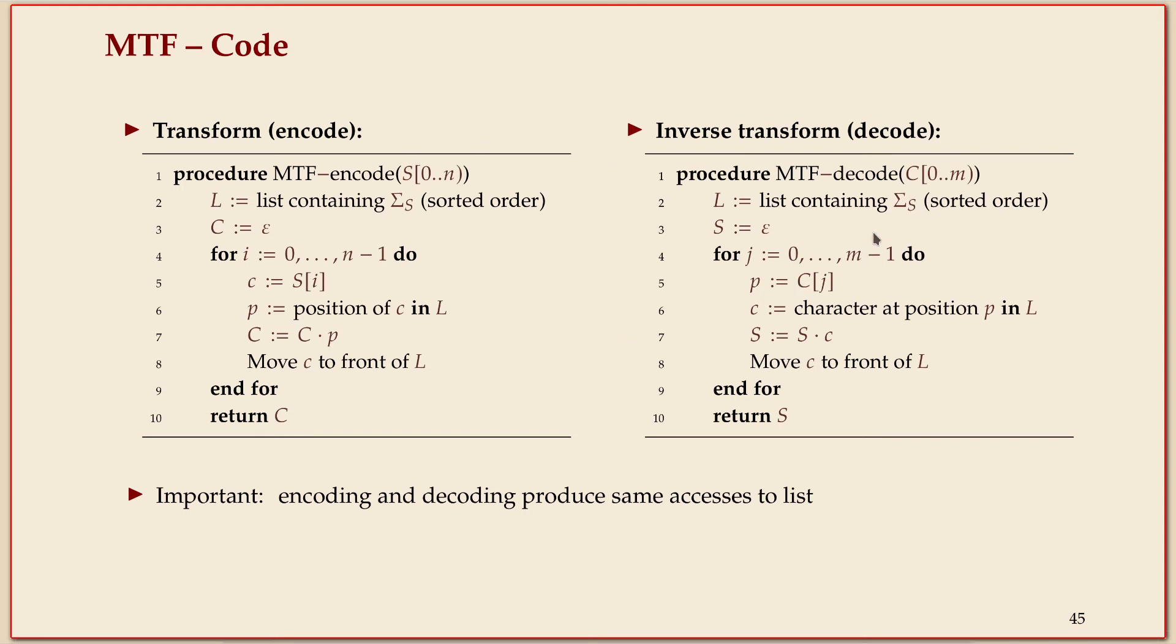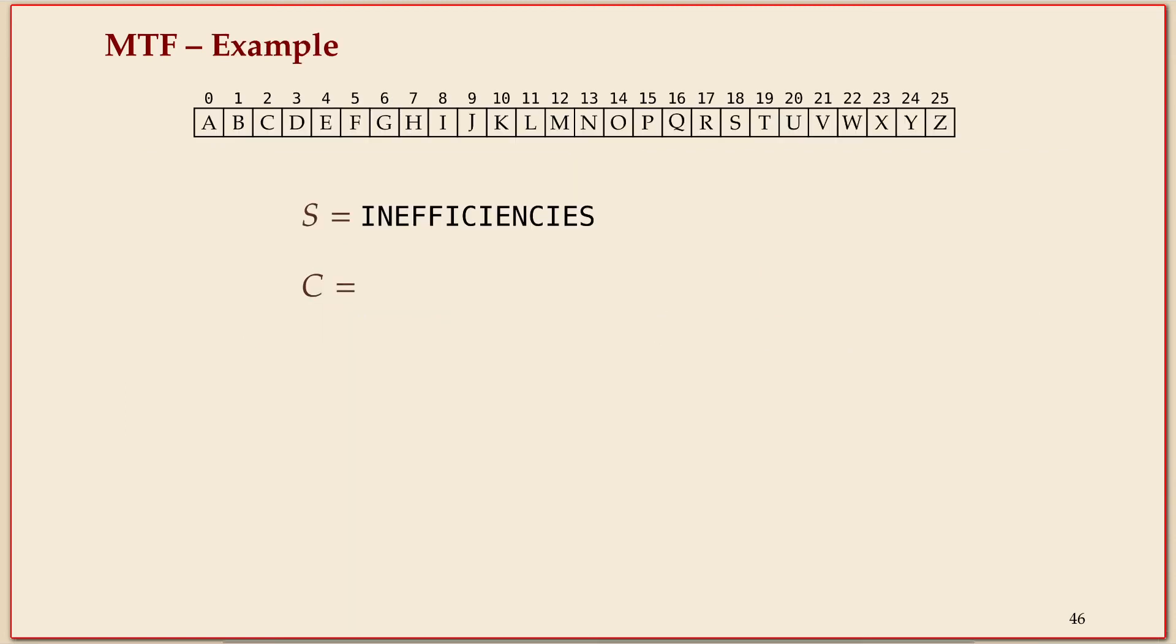I wanted to point out in this case how very parallel the encoding and decoding is. The decoding does the same - it starts with the list in sorted order, it starts with empty source text that's what it produces, but then iterates through all the positions in the coded text. And now instead of finding a character it finds the position, so it jumps to position P in the Move to Front list and gets the character from there and then outputs that, and then does the same Move to Front step. Of course it's important that they do this nicely in lockstep otherwise we wouldn't decode to the same thing that we started with.